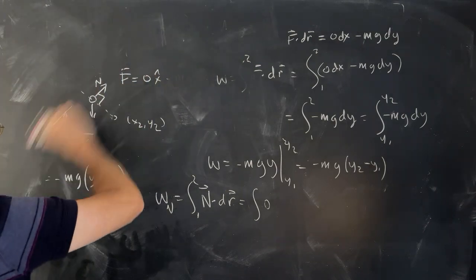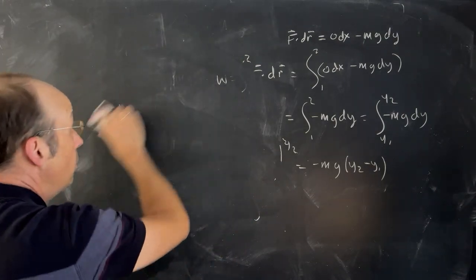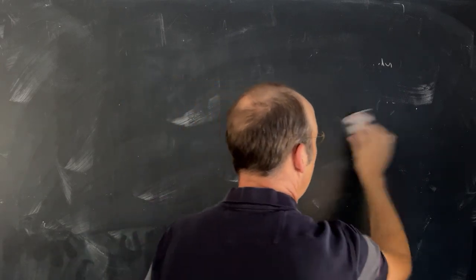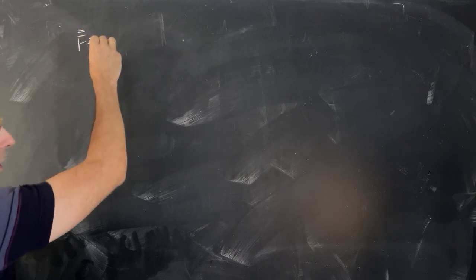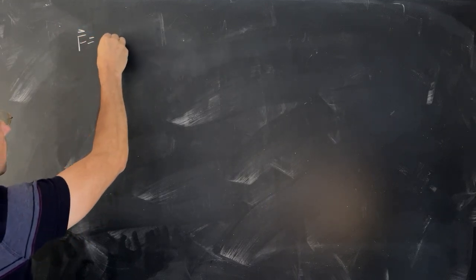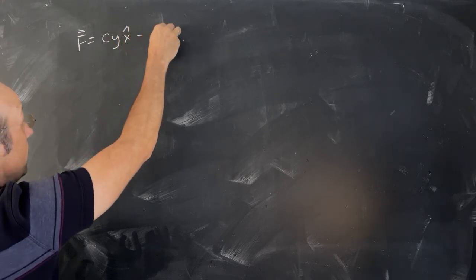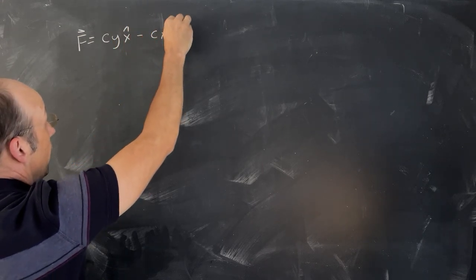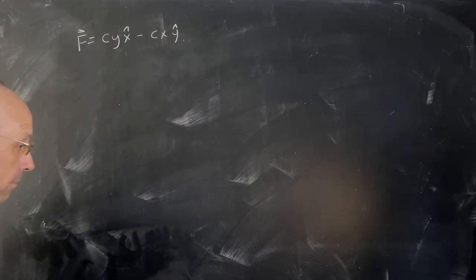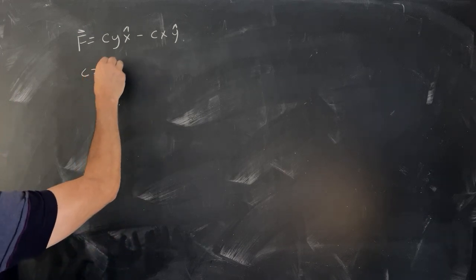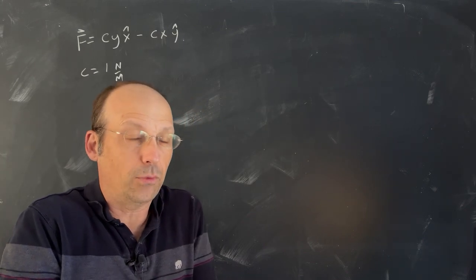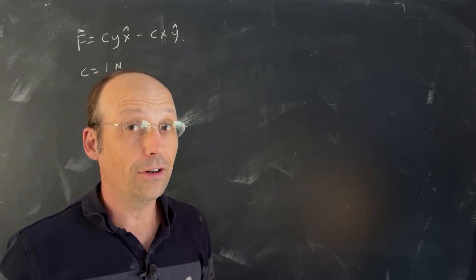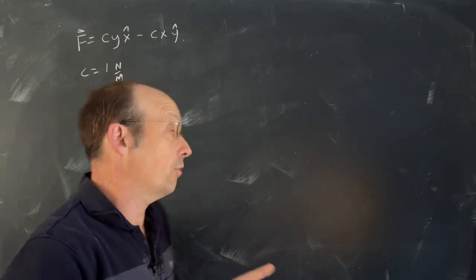Let's do a more interesting case - we really have to think about how we do an integral in two dimensions. I want to use a special make-believe force: F = CY x̂ minus CX ŷ, where C is just a constant. Let's say C equals 1 Newton per meter, just to make things easier. I didn't want to just write Y x̂ minus X ŷ because then the units don't work, and I believe in units.